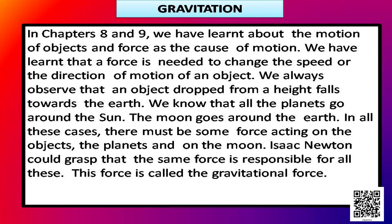They change their place in accordance with another stationary object. For example, earth changes its position but the sun is stationary. Again, the moon also revolves around the earth. What makes them move around without any disturbance? There must be some kind of force which is keeping them in a particular orbit. This force is called the gravitational force.